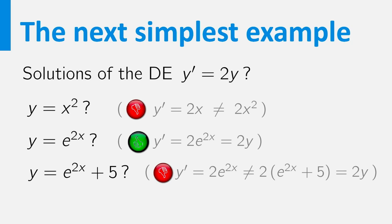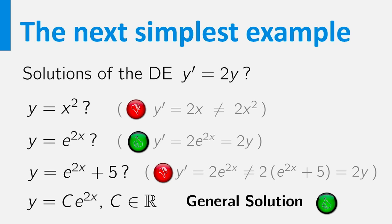No, for this equation, multiples of the solution e to the power 2x provide more solutions. The derivative of c times e to the 2x equals 2 times c times e to the 2x. In fact, all solutions are of this form. So the general solution is y equals c times e to the 2x for an arbitrary c.